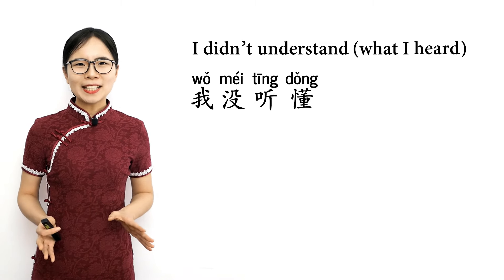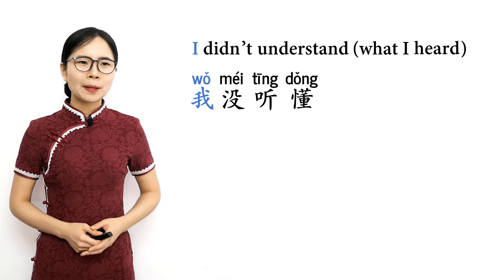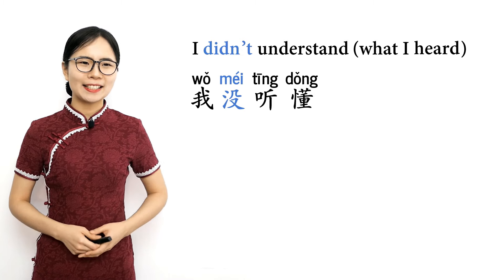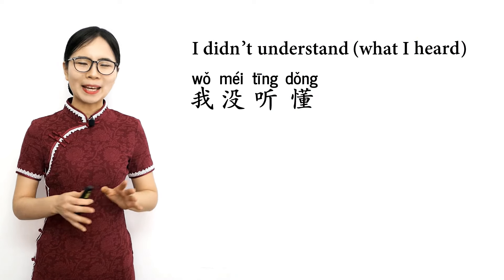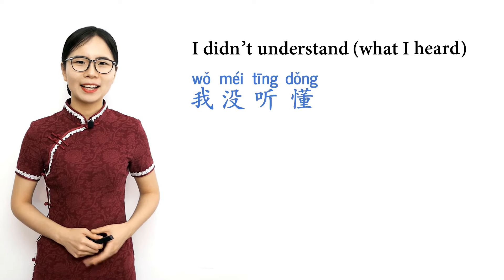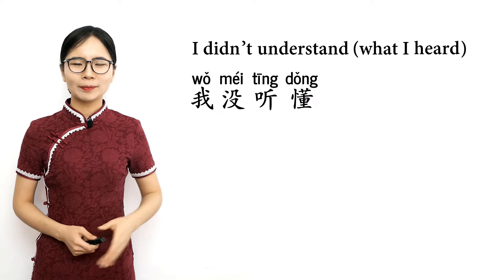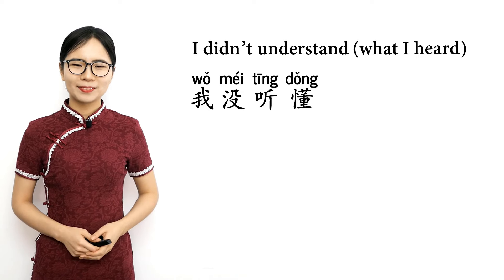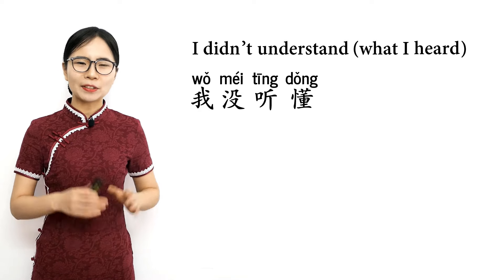If someone says something you didn't understand, you can say 我没听懂. 我 means I, 没 is used to negate a past action — here it means 'didn't,' 听 means listen or hear, and 懂 means understand. So 我没听懂 means 'I didn't understand what I heard.' Please repeat after me: 我没听懂, 我没听懂 — I didn't understand what I heard.